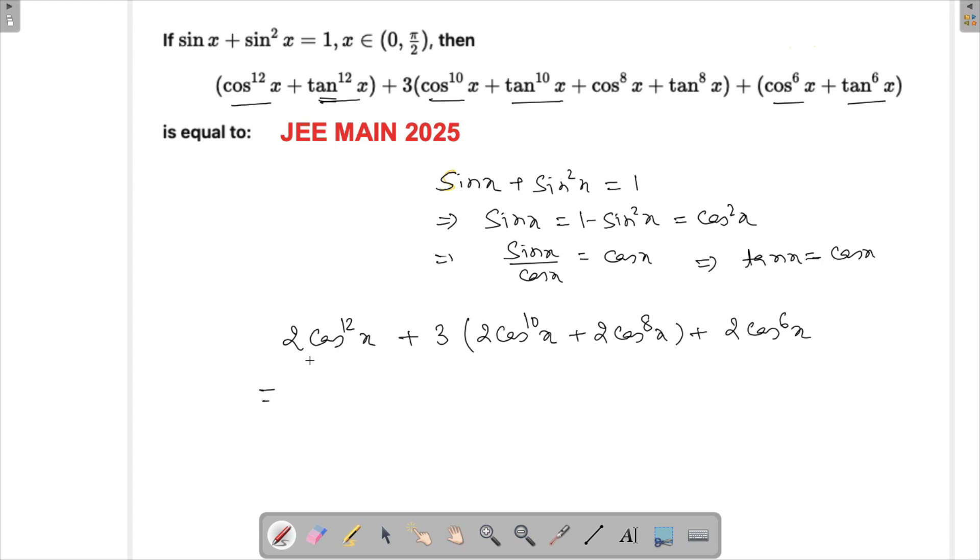Now we can again observe something here. If I take this 2 common and write this cos 12x as cos raised to the power 4x raised to the power 4x cubed, and then let's look at this.